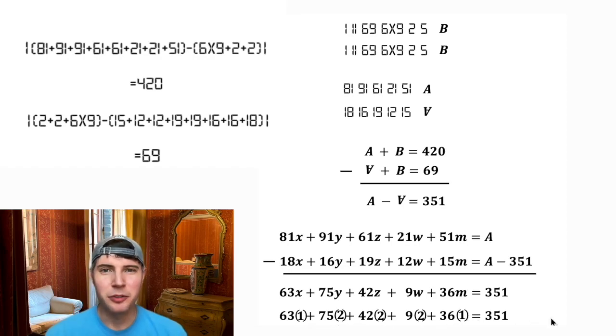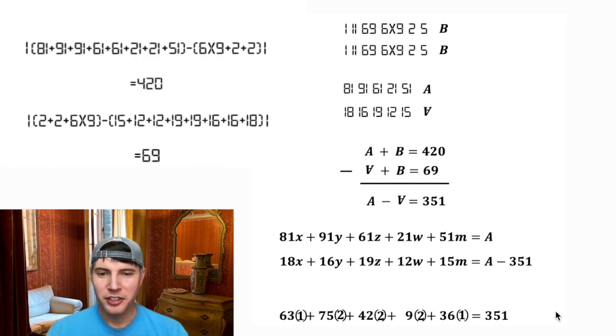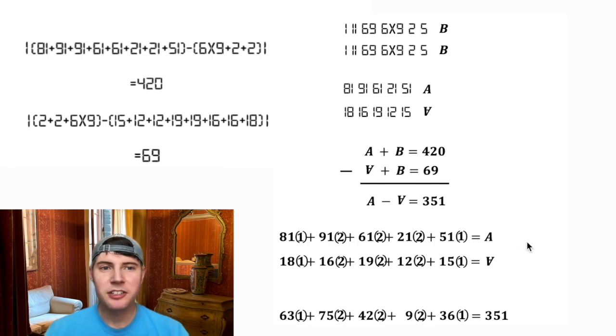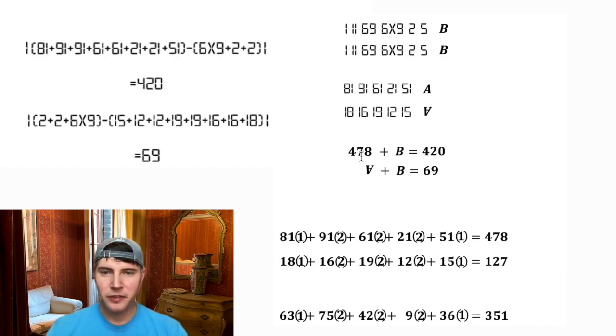So then clean up all this stuff, rewrite this as upside down A, and then plug in each of these numbers that I got. So when I add all these together, my upright A is going to be equal to 478 and my upside down A is going to be equal to 127. So now let's get rid of this stuff, plug in 478 for the upright A and 127 for the upside down A, and now we can solve for B.